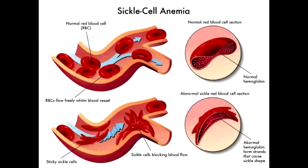What happens if sickle cell anemic patients are exposed to parvovirus B19? If sickle cell patients are exposed to parvovirus B19, this would lead to aplastic crisis.